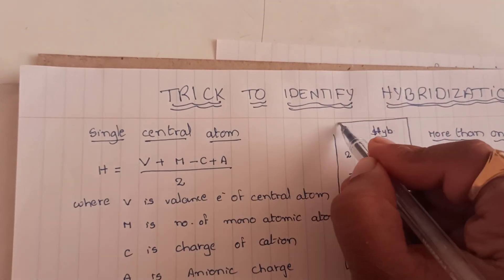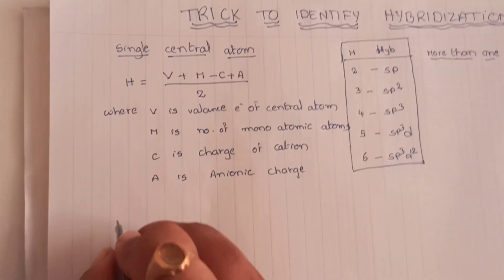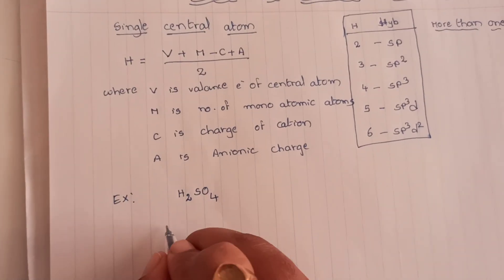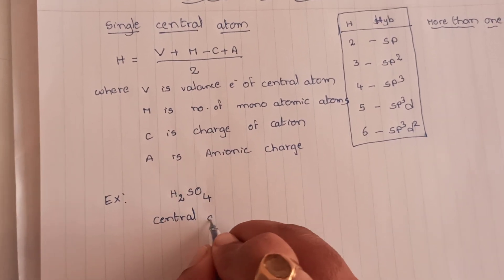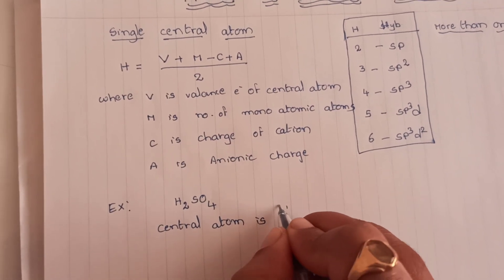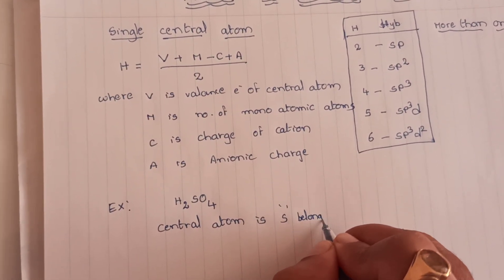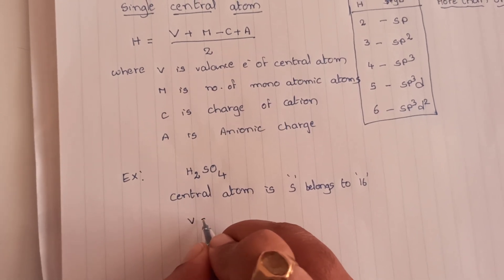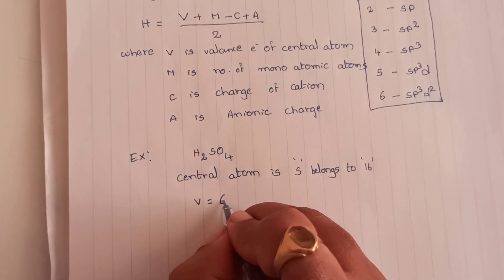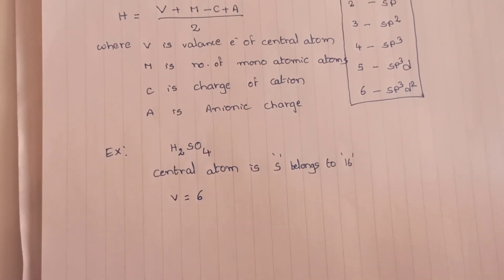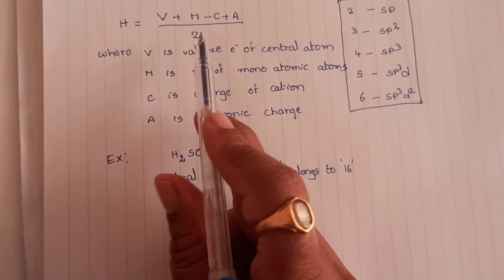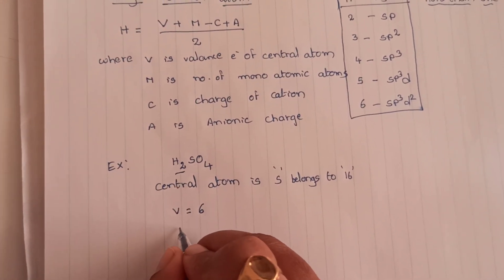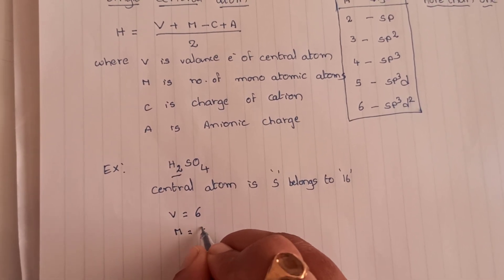You remember this from VSEPR theory and types of hybridization. Now let us see with one example. Let us take H₂SO₄, sulfuric acid. The central atom here is sulfur. Sulfur belongs to the 16th group, so the number of valence electrons — V — is 6.